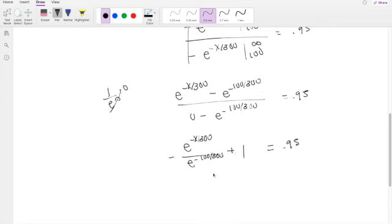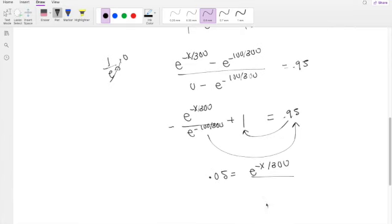Bringing this over to the other side, and 0.95 onto this side, you get 0.05 equals e to the negative x over 300, divided by e to the negative 100 over 300.